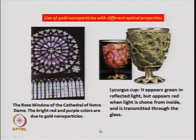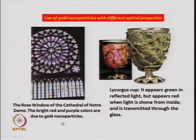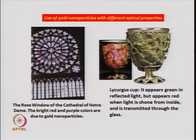People were making these nanoparticles long ago. For example, this is a glass window from the cathedral of Notre Dame, a very famous church. The glass has been impregnated with gold nanoparticles, and all the colors in the glass are due to gold nanoparticles. When it was made in the early years, it was probably not known why gold was giving these colors.